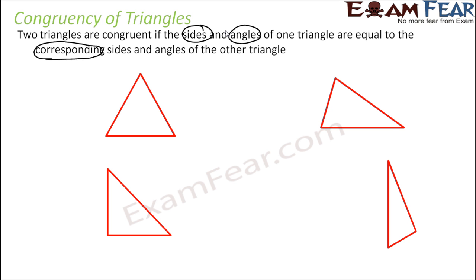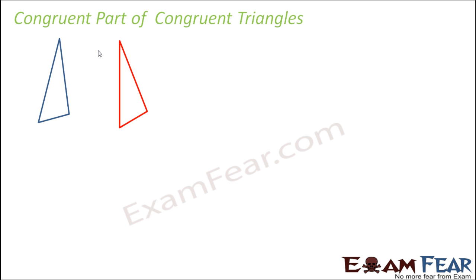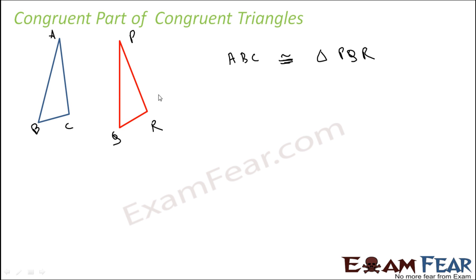Let's look at the notation for congruent triangles. For triangle ABC and triangle PQR, we write: triangle ABC is congruent to triangle PQR. The order matters very much. When we say ABC is congruent to PQR, it means side AB equals side PQ, side BC equals side QR, and side AC equals side PR.